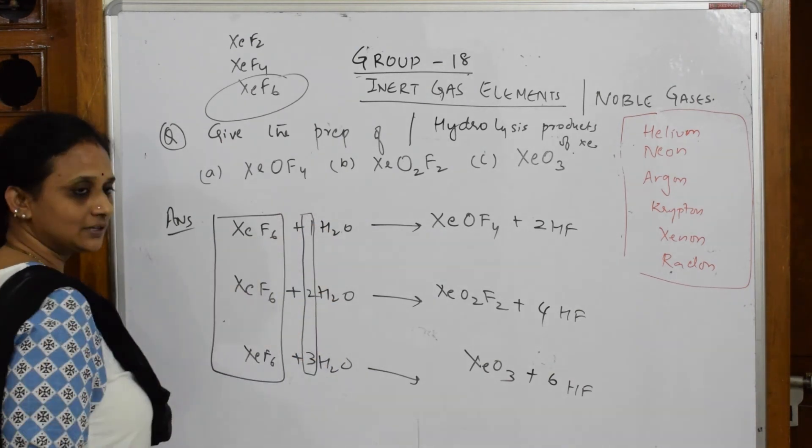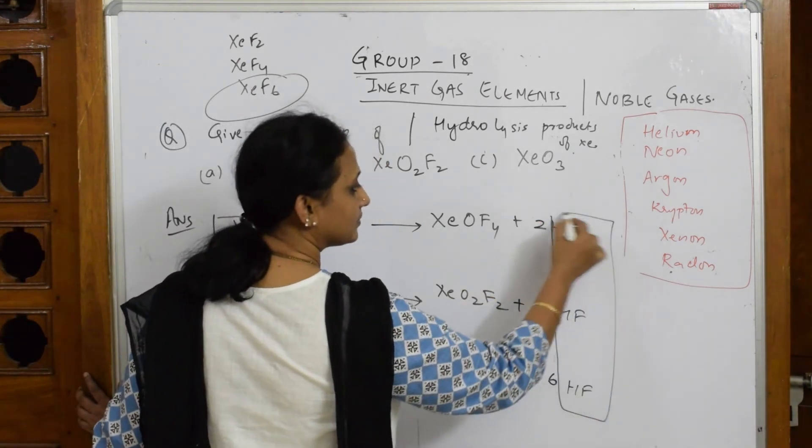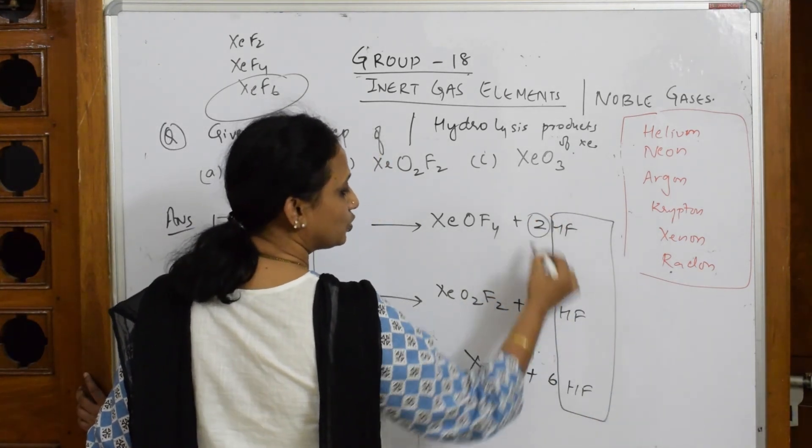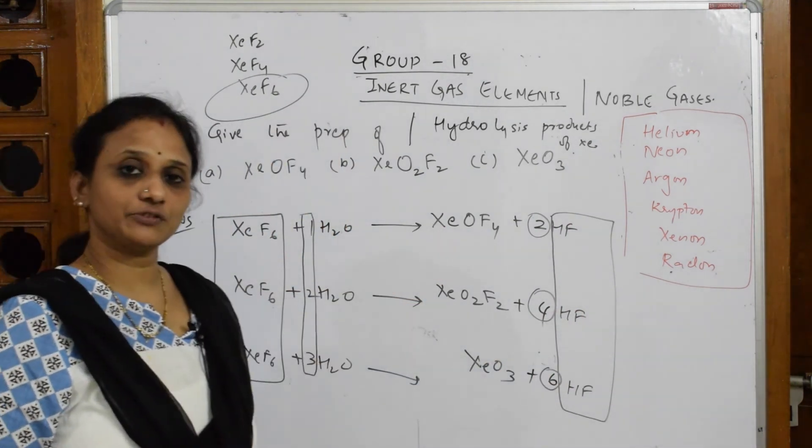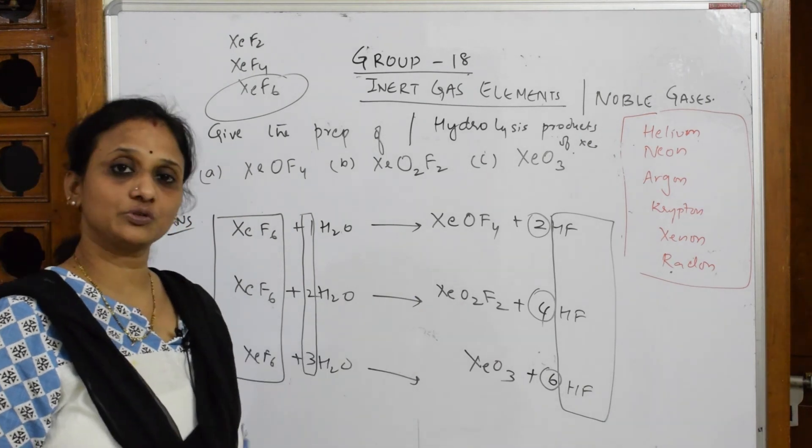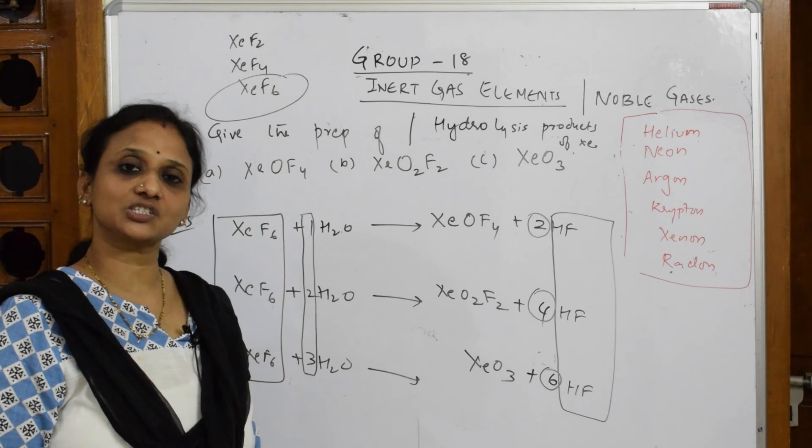Remember one important thing: XeF6 is common. Water will be one, two, three moles. HF is again common. For one mole you get XeOF4, two moles XeO2F2, three moles XeO3. Let's come back and learn the structures of everything.